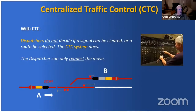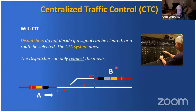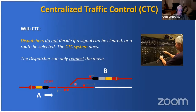With CTC, dispatchers don't decide if a signal is cleared or a route can be changed — he can only request it. The model railroader has to understand what happens when there's an encroachment on a circuit. If David is sitting at his CTC machine and a train is occupying a block, there's nothing he can do about clearing that signal. The logic has to be there to help the crews — otherwise it builds confusion.